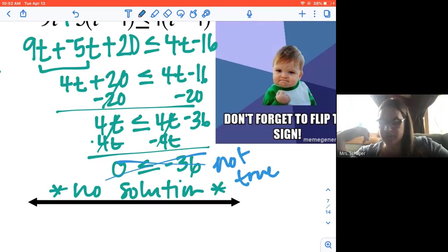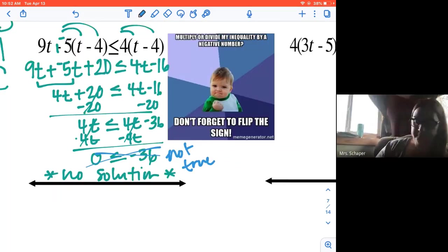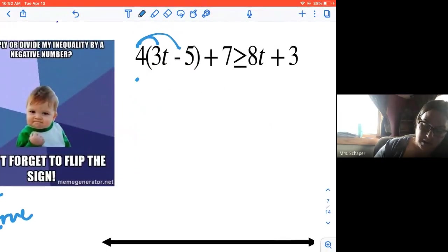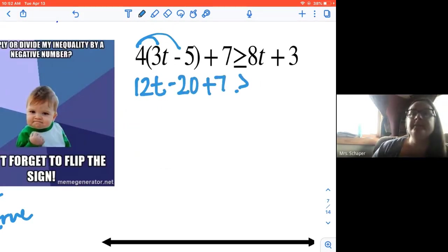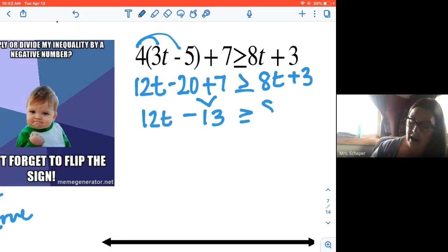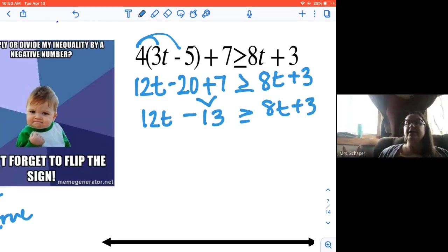So let's try this one. Let's try simplifying this one. So I'm going to start by distributing. So I've got 12t minus 20 plus seven, and I've got 8t plus three. Negative 20 plus seven is negative 13. I'm still working on simplifying.